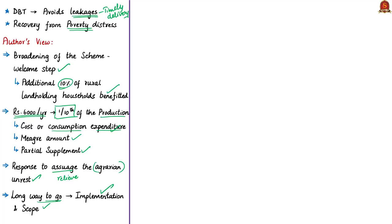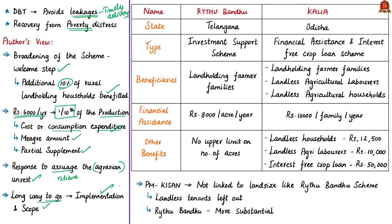The author says the PM-Kisan scheme is based on major initiatives by two state governments: the Raitubandu scheme of Telangana and the Kalia scheme of Odisha. The Raitubandu scheme is an investment support scheme giving financial assistance of Rs. 8,000 per acre per year to landholding farmer families, with no upper limit on the number of acres. The Kalia scheme — Krushak Assistance for Livelihood and Income Augmentation — is a financial assistance and interest-free crop loan scheme providing Rs. 10,000 per family per year. Its beneficiaries include landholding farmer families, landless agricultural labourers and landless agricultural households.